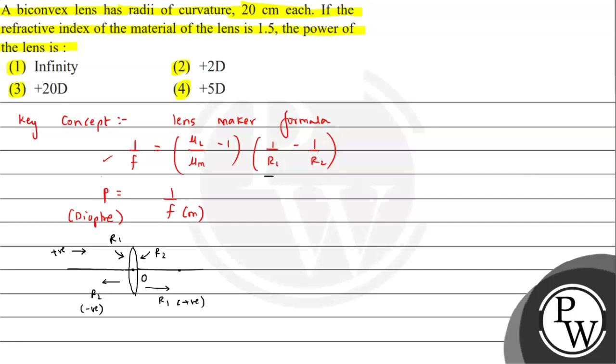So we can say by lens maker formula we can write 1 upon f equals to, refractive index of lens is given as 1.5 minus 1, into 1 upon r1, and this will be positive because negative of negative becomes positive. 0.5 into this becomes 2 by 20, that is 1 by 10. So the result will be 1 upon 20. Yes, 1 upon 20 positive.